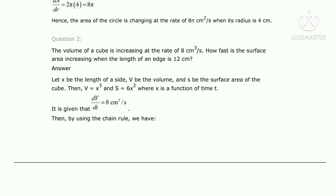Considering the side as x, the volume of a cube is V equals x cubed, and the surface area S equals 6x squared, where x is the side. The volume is increasing at the rate means dV/dt is given as 8 centimeter cube per second.